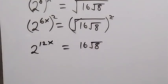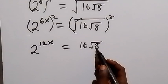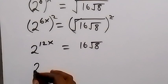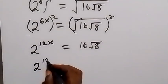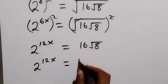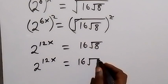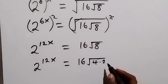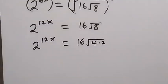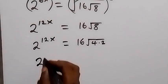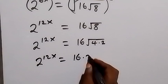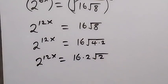In the next step, let's write root 8 another way: root 8 means root of 4 times 2, which we can separate as root 4 times root 2. Root 4 is 2, so we take it out. We have 2 raised to power 12x equals 16 times 2 then root 2, because root 4 is 2, and 16 times 2 gives us 32.